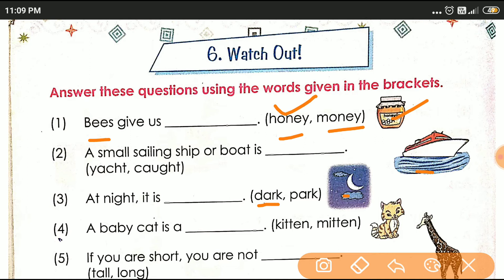Fourth one: A baby cat is a dash. A baby cat — baby cat को क्या बोलते हैं? बिली के बच्चे को यहाँ पे दो options दिए हैं: kitten and mitten. You see in the picture — kitten! Write the answer: kitten, k-i-double t-e-n. Kitten means बिली का बच्चा. Mitten, m-i-double t-e-n — mitten means gloves जो हाथ को पहनते हैं।